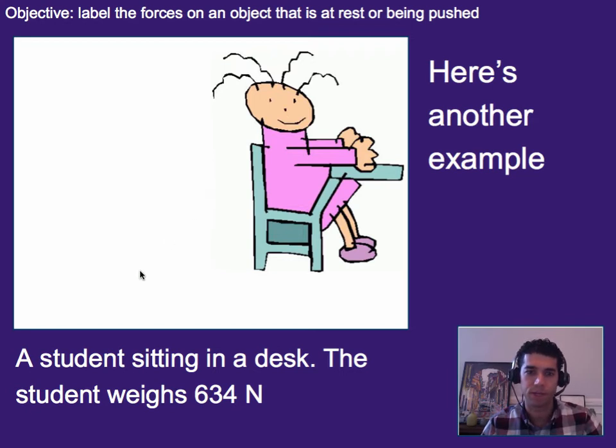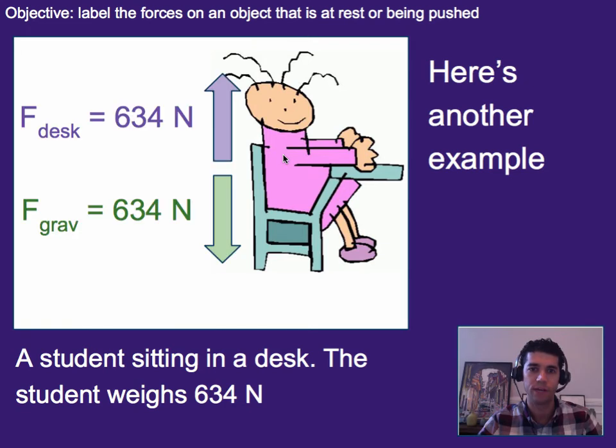Alright let's try one more example. Go ahead and pause. See if you can figure this one out on your own now that it has some values. Alright welcome back. So we can see a student sitting in the desk. The student weighs 634 Newtons. So we know there's going to be the force due to gravity pulling that student down. But we also know that the desk is supporting them. They're not falling. They're not going anywhere. So we know that there also must be a force of 634 Newtons pushing up on the person to cancel out the weight. Otherwise they'd fall.